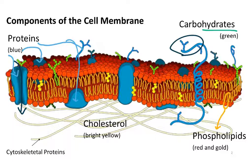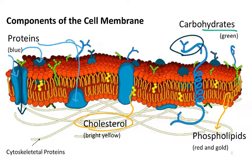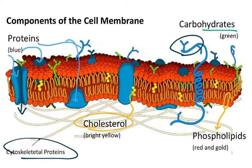Lastly, in bright yellow, we have cholesterol. Remember, cholesterol is also a lipid — it has four fused carbon rings as its structure. Cholesterol enhances the rigidity of the cell membrane because the phospholipids themselves are not chemically bound together, and so the membrane at body temperature is a liquid. The last thing in this image are proteins of the cytoskeleton, which in some cases anchor different proteins in the cell membrane.